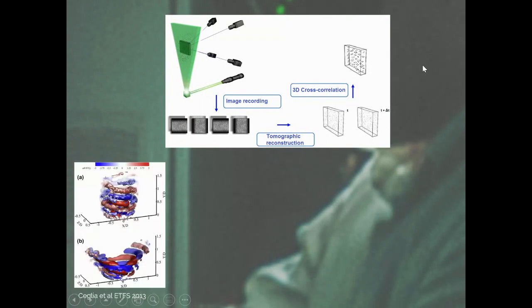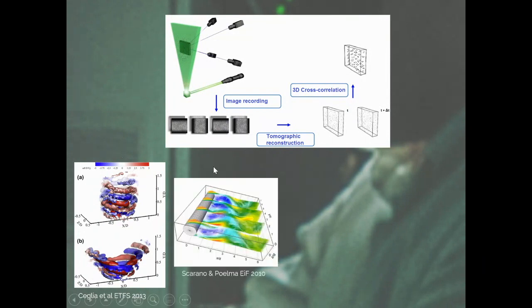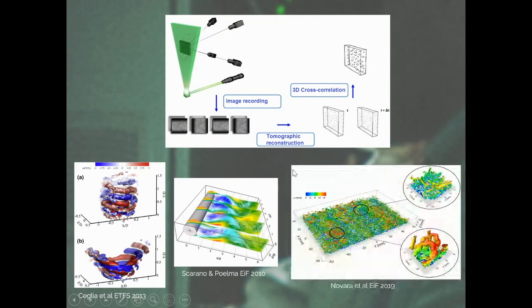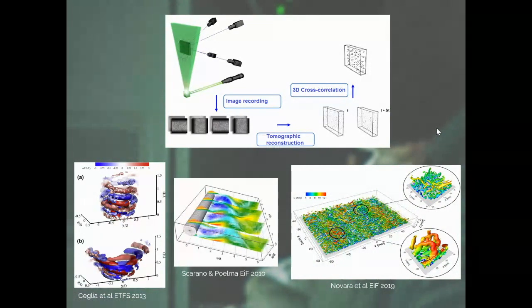This is really nice. And we got over the years interesting results. This is a result from my previous group in Naples, where we measured the flow at the exit of a swirling injector. This is the result from the group of Theodorff, maybe the first application of tomographic PIV in the wake of a cylinder. And this is the most recent one from DLR. You see that this starts already looking like the LES I've shown before. This is indeed a boundary layer flow,